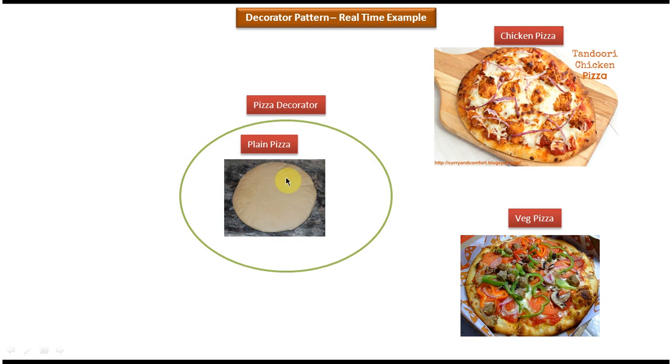In this case, plain pizza is an existing object. And this pizza decorator adds chicken or vegetable based on the pizza we want.